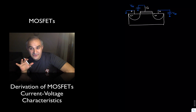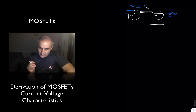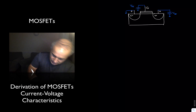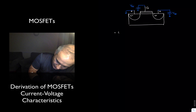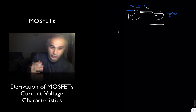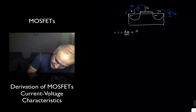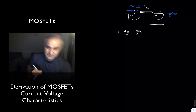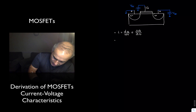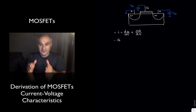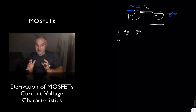Our objective in this video is to derive an expression for the current flowing drain-to-source in the MOSFET transistor from fundamental principles. Current, by definition, is rate of change of charge over time. So let's find an expression for the charge, and then the time, and then try to find the expression for the current.